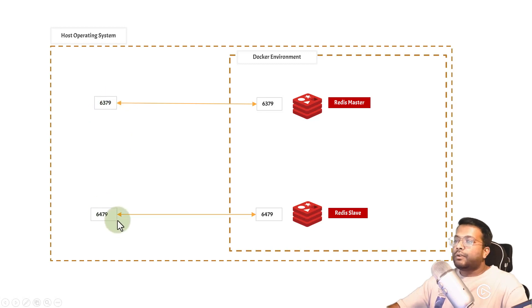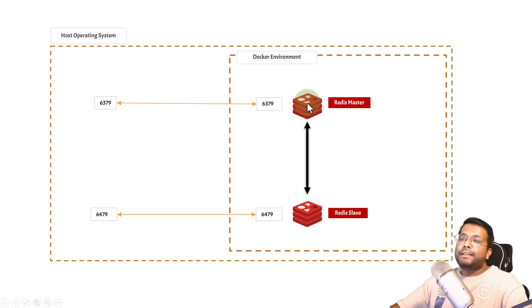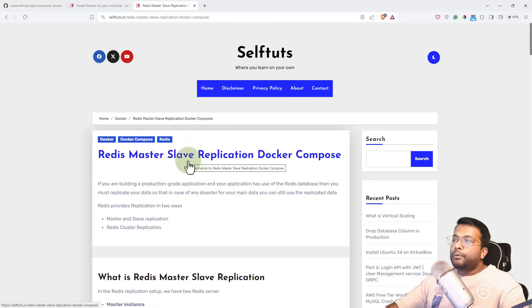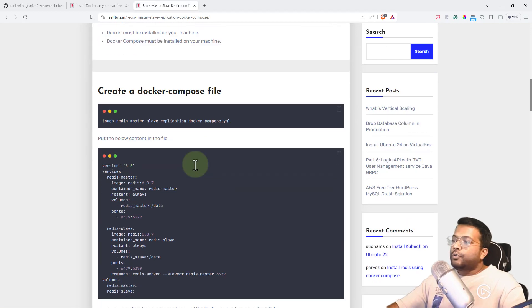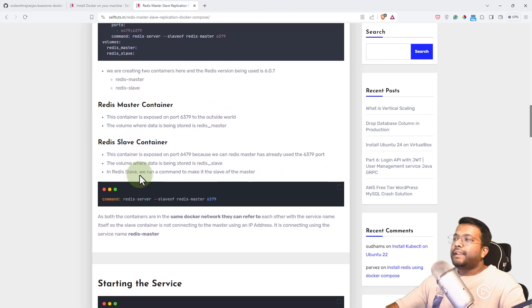You can change the outside port to whatever you want, but here we'll put 6479 both on the host OS and inside the Docker environment. Then we'll establish replication between the two Redis instances — whenever new data is pushed to the Redis master, the same will be replicated to the slave. I've also created a full blog post on Redis master slave replication, where everything is explained in detail if you want to copy configurations from there.